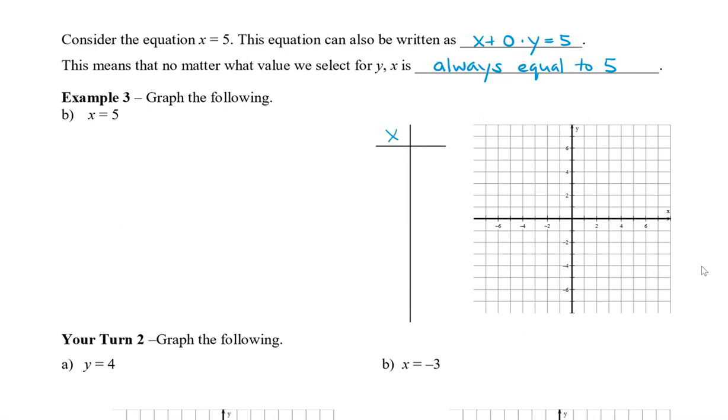All right. So, graph the following x equals 5. So, this time, we're going to choose values for y. So, let's say, again, we start at negative 2. 0 times negative 2 is 0. So, x equals 5. Negative 1 for y, 0 times negative 1 is 0, x equals 5. And so on. So, no matter what numbers we choose for y, x will always equal 5.